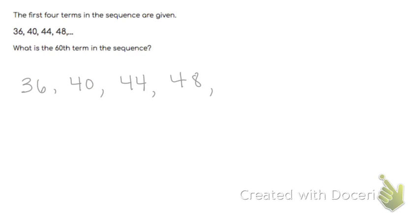Remember, each of these are called a term. This is our first term, so we call it when n is 1. This is the second term, the third term, and the fourth term.